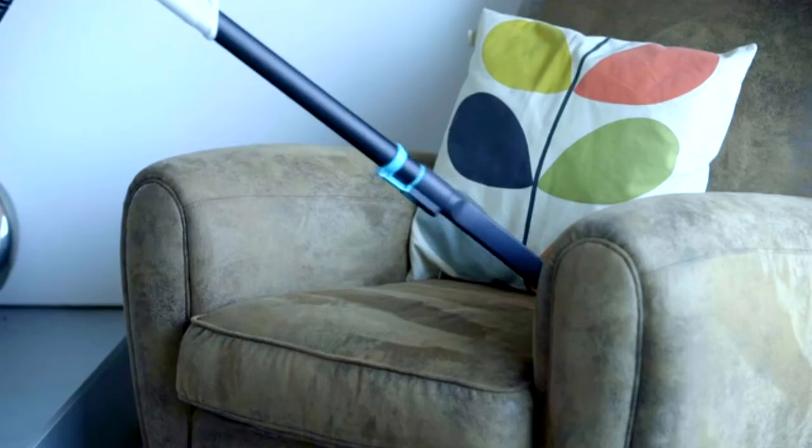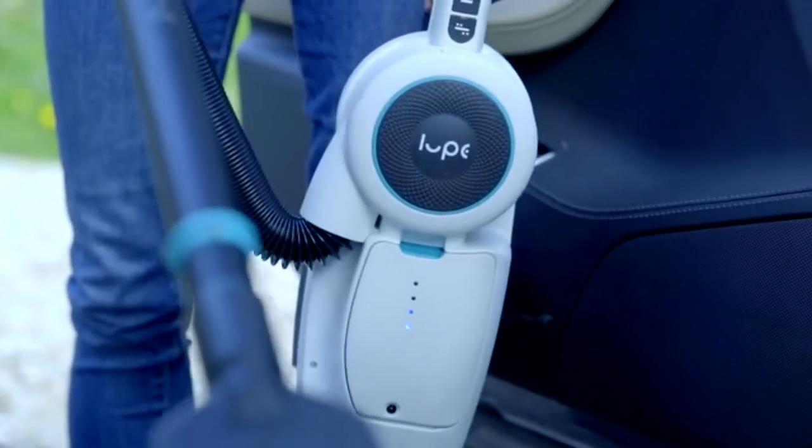This vacuum cleaner will clean stairs, it'll clean the upholstery, inside of your car, and it's built to be user friendly. Loop really is a game changer.